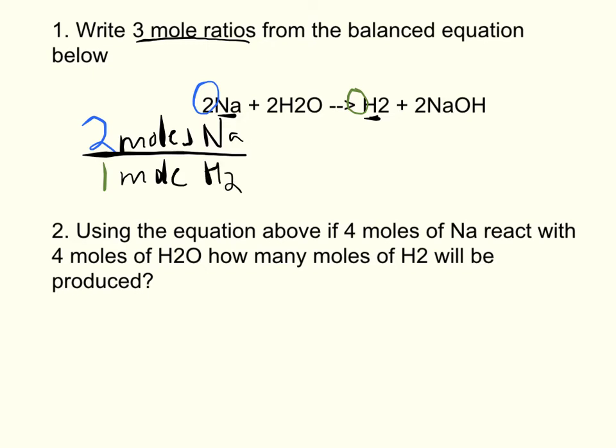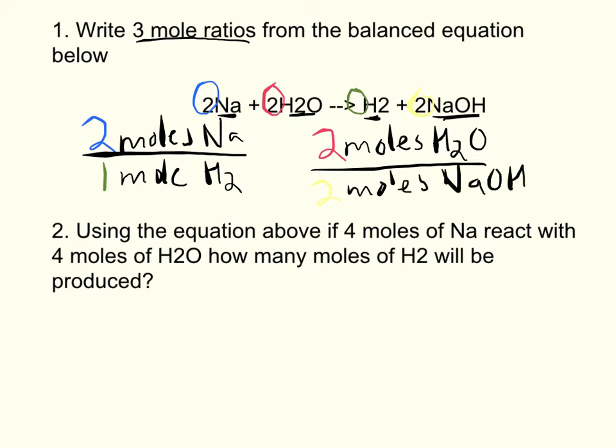We could also write the inverse of this, meaning the opposite, one mole of H2 over two moles of Na. Or let's do a mole ratio between H2O and NaOH. Since the coefficient in front of H2O is two, we could write two moles of H2O is needed to make two moles of NaOH. It doesn't matter what compounds you choose. I'm just going to write two mole ratios, but you could do a third one as the inverse of either of these or any other two compounds together.